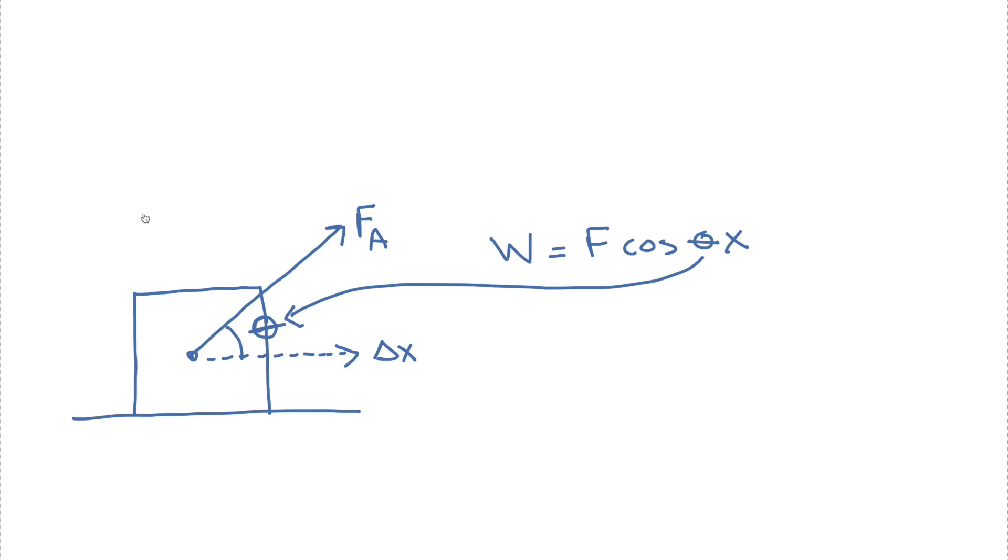In this first example, I'm going to have a box and it's going to be pulled on a frictionless surface with an applied force equal to 5 newtons and it is going to move a displacement equal to 2 meters. That's going to be the displacement.